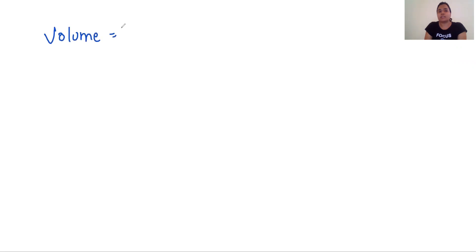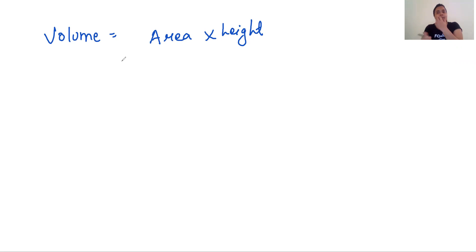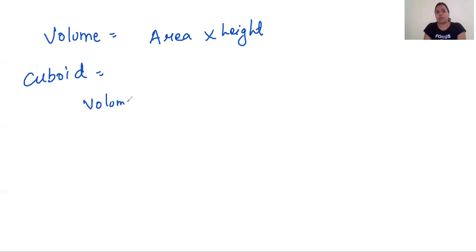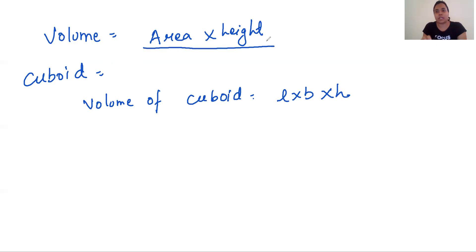Let's start with the first shape: the cuboid. Before starting with the formulas, I want you to know that volume is basically area into height — the area of the base shape of that 3D shape. If it is a cuboid, the base shape is a rectangle, so volume of cuboid = area of rectangle × height = L × B × H. Volume is always the area of the base shape multiplied by height.